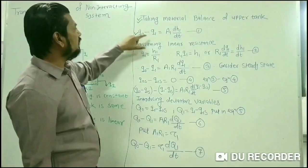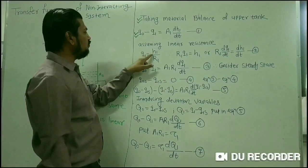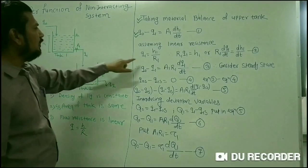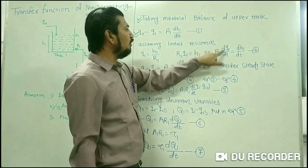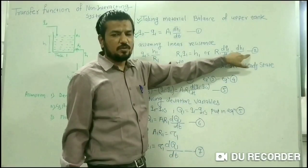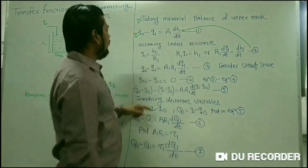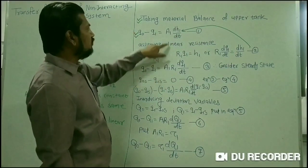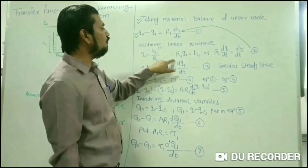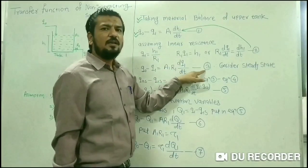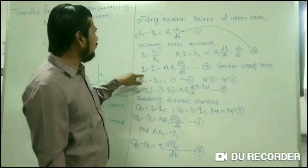Applying the linear resistance assumption, Q1 = H1/R1, so R1·Q1 = H1. Differentiating with respect to time gives R1·dQ1/dt = dH1/dt — this is equation 2. Substituting equation 2 into equation 1 gives Q0 - Q1 = A1·R1·dQ1/dt, which is equation 3. Now, at steady state (time → ∞), the accumulation term equals zero, giving us Q0s - Q1s = 0, which is equation 4.